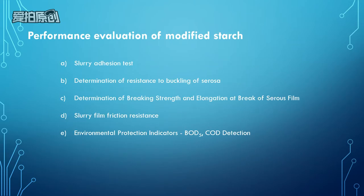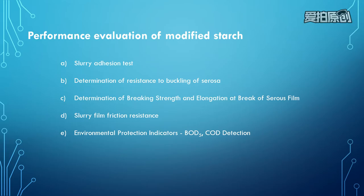The next section is the performance evaluation of the modified starch. We evaluate the adhesion of the grafted starch and determine the abrasion resistance, breaking strength, elongation at break, and friction resistance. We also perform environmental protection indicator tests including BOD5 and COD detection.